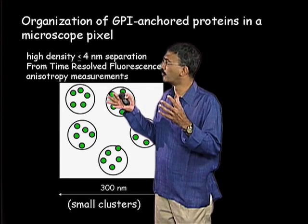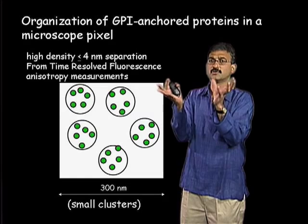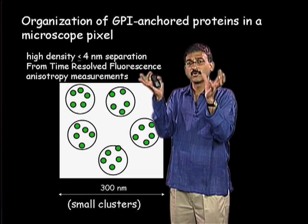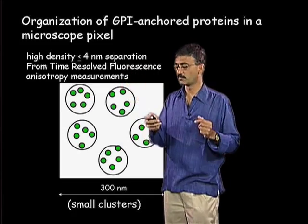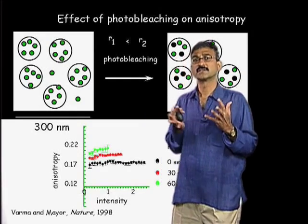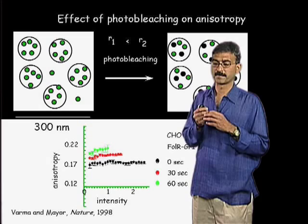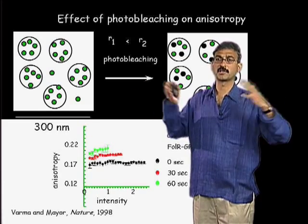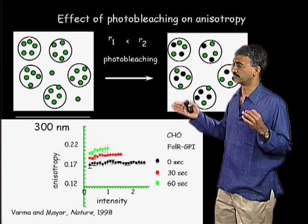Using time-resolved fluorescence anisotropy, we found that the GPI-anchored proteins exhibiting FRET or close proximity are present at incredibly close distances — around 4 nanometers separation. Two GPI-anchored proteins, in this case two GFP molecules that are 3 nanometers in size on their own, have their centers within 4 nanometers of each other — almost close-packed, almost touching. But this still doesn't tell us the size of these FRET-competent structures, which could range from a few nanometers to hundreds of molecules, all fitting within the ~300 nm optical resolution of a microscope.